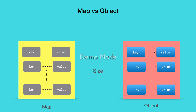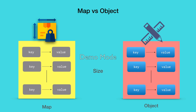The third difference is in the way we get the size. With map, there is an out-of-the-box size property available, which returns the total number of entries in the map. But there is no direct method or property to get the size of the object. Just like the iteration process, we need to get hold of the entries, keys, or values in the object and then calculate the length.